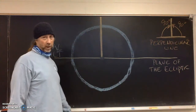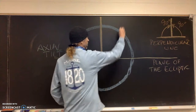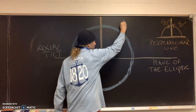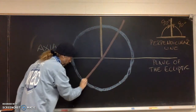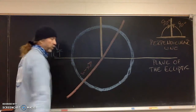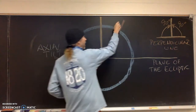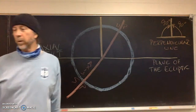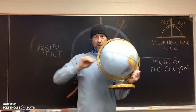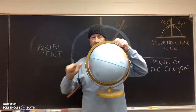Now I'm going to draw in the axis. This is the axis, which means, of course, the south pole is down here and the north pole is here. Remember, we rotate around our axis — rotating west to east around the axis.